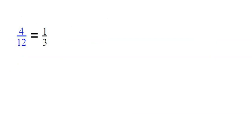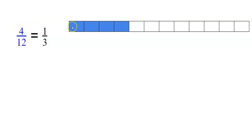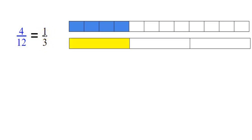Let's take a different fraction. If I take 4 over 12, is that equal to 1 third? Take a bar and divide it up into 12 parts, and four of those are shaded. Is this equal to 1 third? That means I take a bar, divide it into three parts, and only one is shaded. We can see that these are equal lengthwise, therefore 4 over 12 is equal to 1 third.